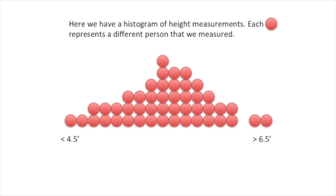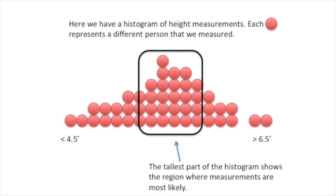Here we have a histogram of height measurements. Each red dot represents a different person that we measured. The tallest part of the histogram shows the region where measurements are most likely. In this case, most of the people we measured were between 5 foot 7 inches and 6 feet tall.